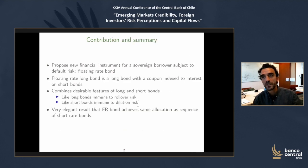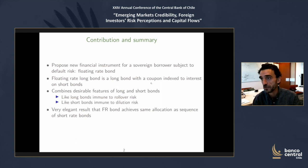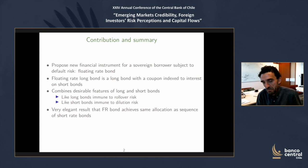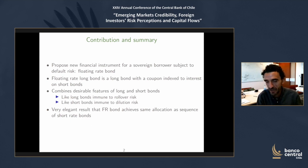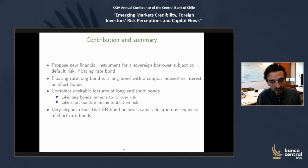What does the paper do? It basically proposes a new financial instrument for sovereign debt borrowers — a floating rate bond. As Mark explained very clearly, this is a pretty simple thing that governments could issue. It's a long bond, and long bonds usually have a fixed coupon, but here the coupon is indexed to the interest rate on short bonds.